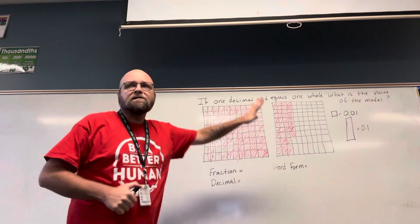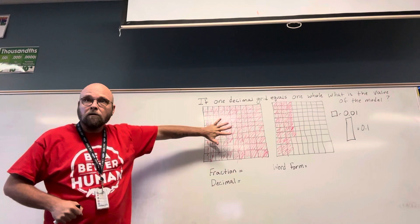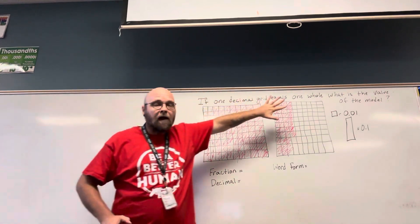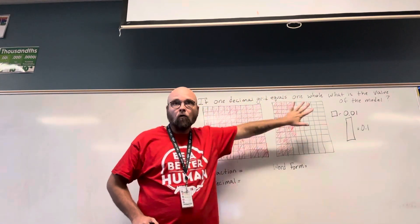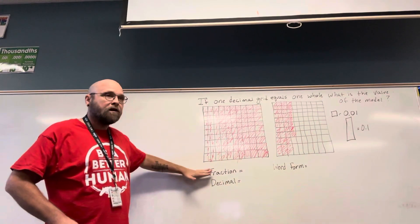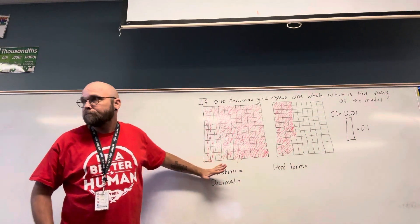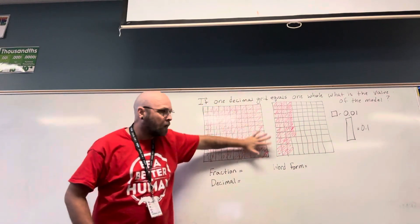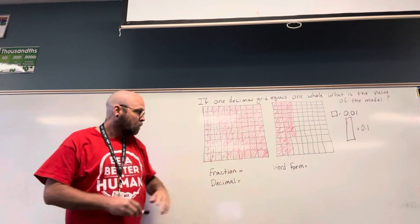So, we're going to have a mixed number here, because we have a whole number, and then we're going to have a part of a whole. So, as a fraction, what is my whole number? How many whole things are shaded in? One.